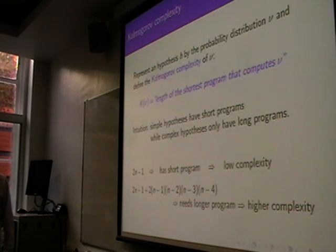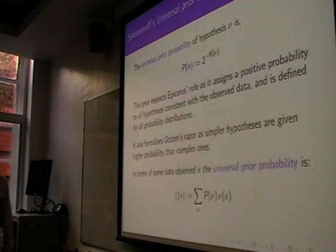This is what you all suspected using Occam's Razor. It has a very short program, so it has low complexity. This here is going to have a longer program. It has higher complexity. That's the intuition. So if you believe in Occam's Razor, low complexity, high probability, high complexity, low probability.